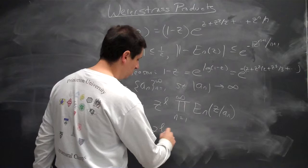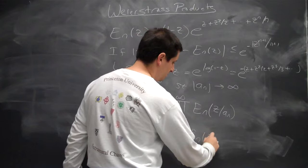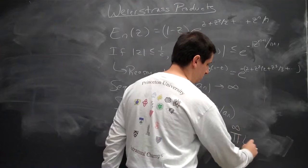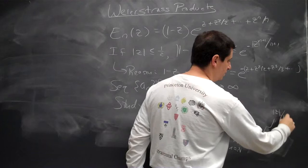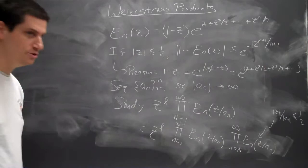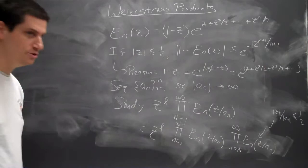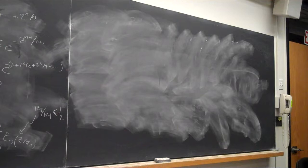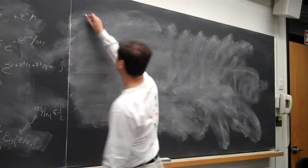We can write this as z^l times the product from n=1 to N-1 of E_n(z/a_n), times the product from N to ∞ of E_n(z/a_n). I can split it like that, and over here I can always assume |z/a_n| < 1/2. It's just very advantageous to split things. The only thing that really matters is that I need some number less than 1 — 1/2 is just the easiest to write down. I don't need to study the finite product; I just need to understand whether this infinite product converges.